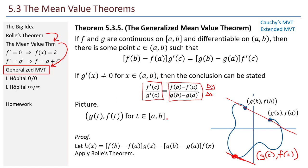The proof is very straightforward. Let h be the auxiliary function. This function satisfies Rolle's hypotheses, so we can apply Rolle's theorem — there's some point where h' equals zero. Taking the derivative and plugging in c gives exactly the statement of the generalized mean value theorem.